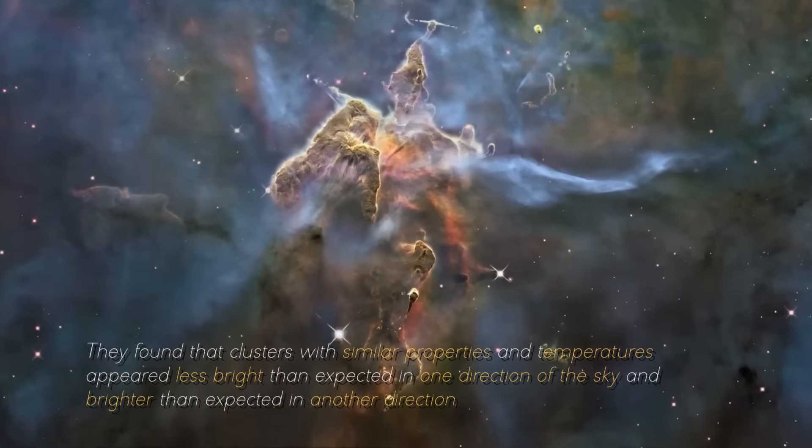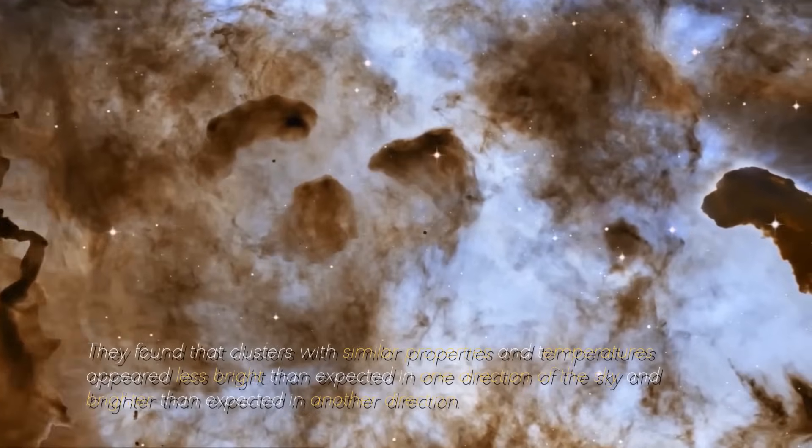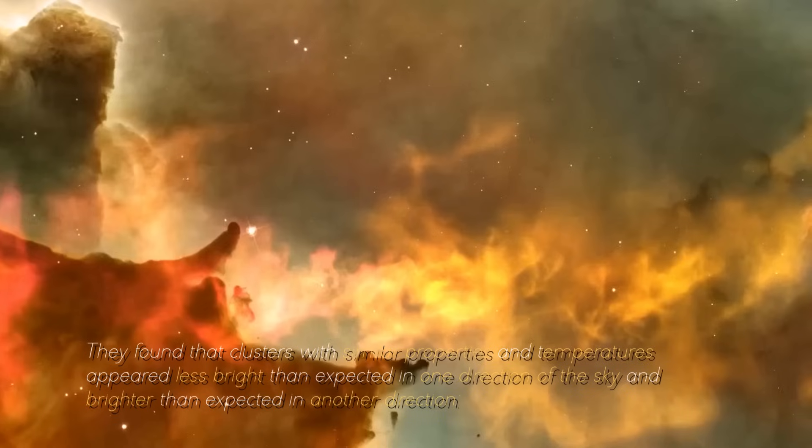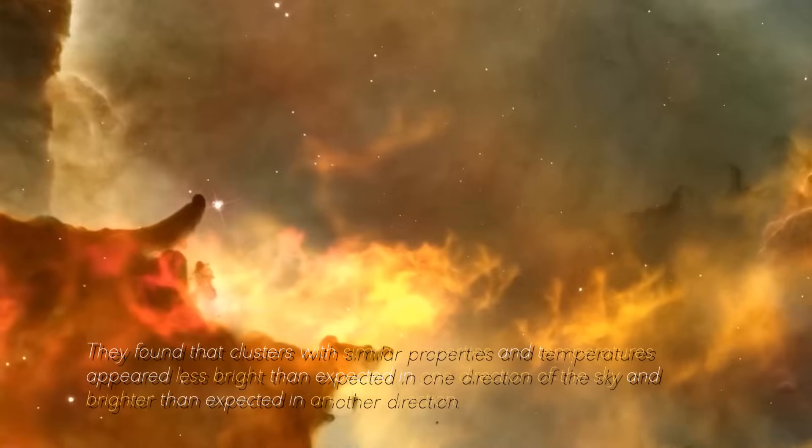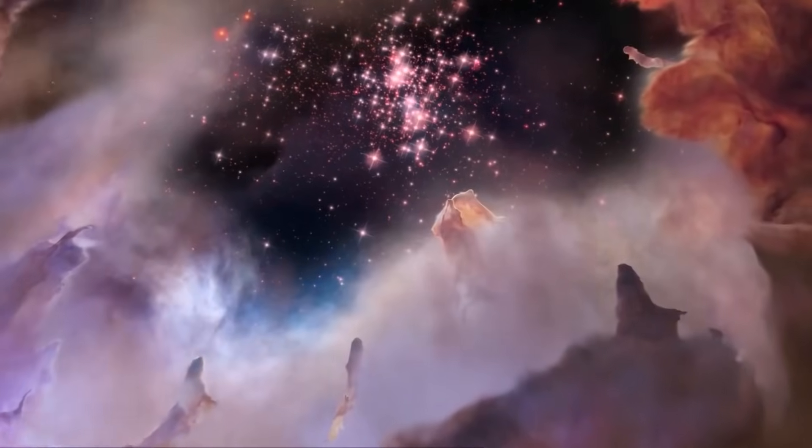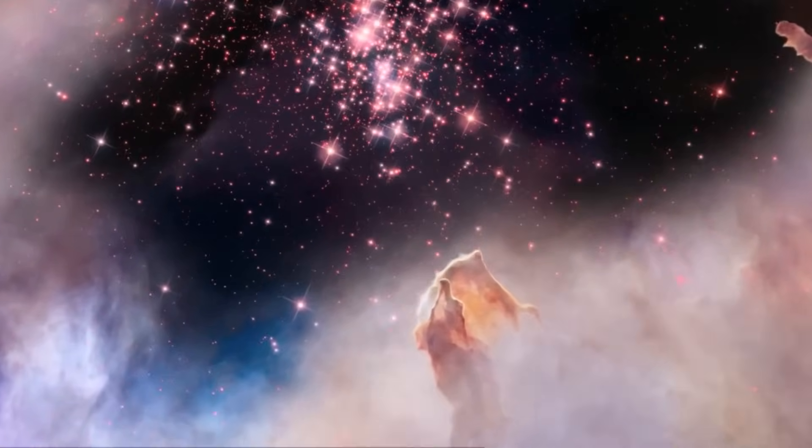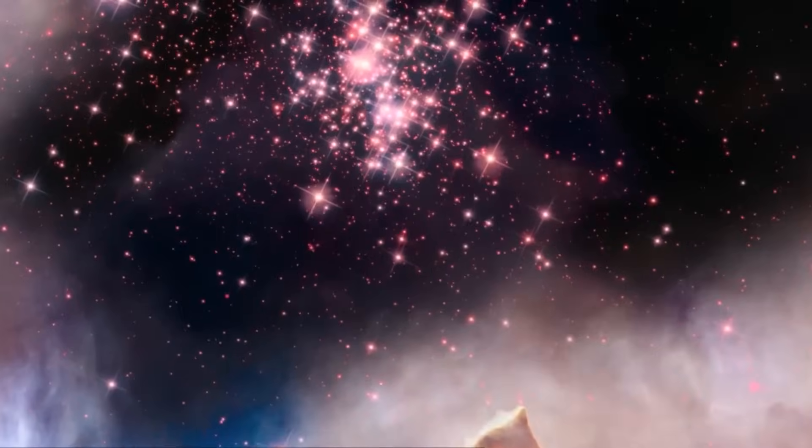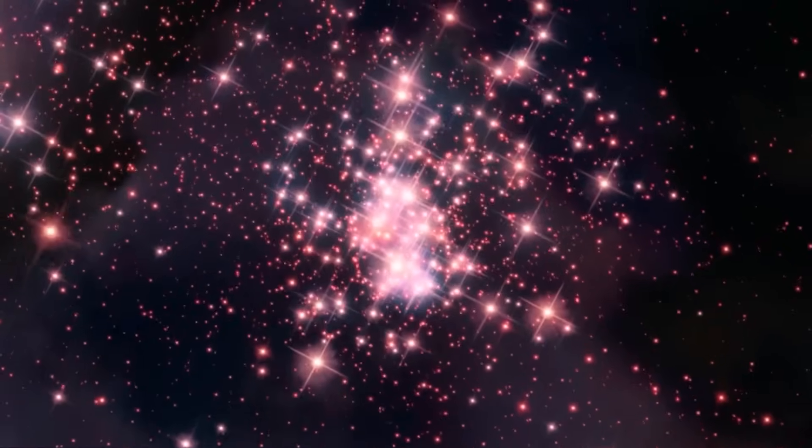They found that clusters with similar properties and temperatures appeared less bright than expected in one direction of the sky and brighter than expected in another direction. These differences were quite significant, hovering around 30% variation. Moreover, these variations were not random, but followed a distinctive pattern depending on the direction in which you looked at the sky.